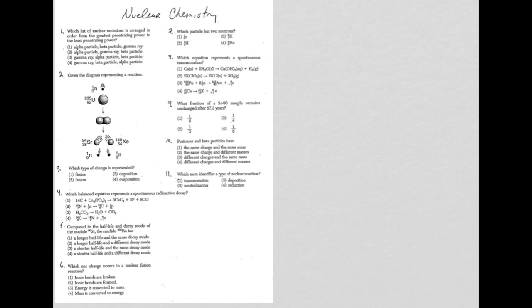We're going to take a look at questions and answers explained for nuclear chemistry questions from the 2015 New York State Chemistry Regents exam. Question one is asking about ordering from greatest penetrating power to least penetrating power for different nuclear emissions.